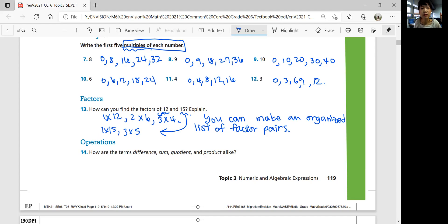How are the terms difference, sum, quotient, and product alike? They're different vocabularies, so how are they similar? All terms describe the operations of numbers. If you find the difference, you subtract. By the sum, you add. By the quotient, you divide. By the product, you multiply the numbers. They're all called operations of a number.